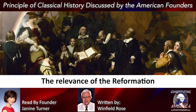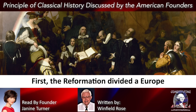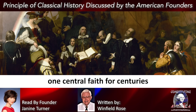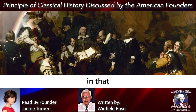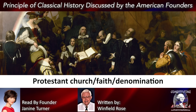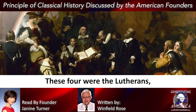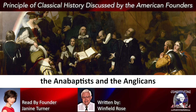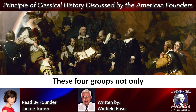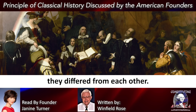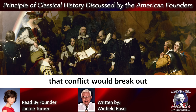The relevance of the Reformation to the American political system can be understood as follows. First, the Reformation divided a Europe that had followed one central faith for centuries into more than two distinct groups, in that there was not one Protestant church faith denomination but four, to be followed by more later. These four were the Lutherans, the Calvinists, the Anabaptists, and the Anglicans in England. These four groups not only differed from Catholicism, they differed from each other. It was therefore unfortunately inevitable that conflict would break out between them.